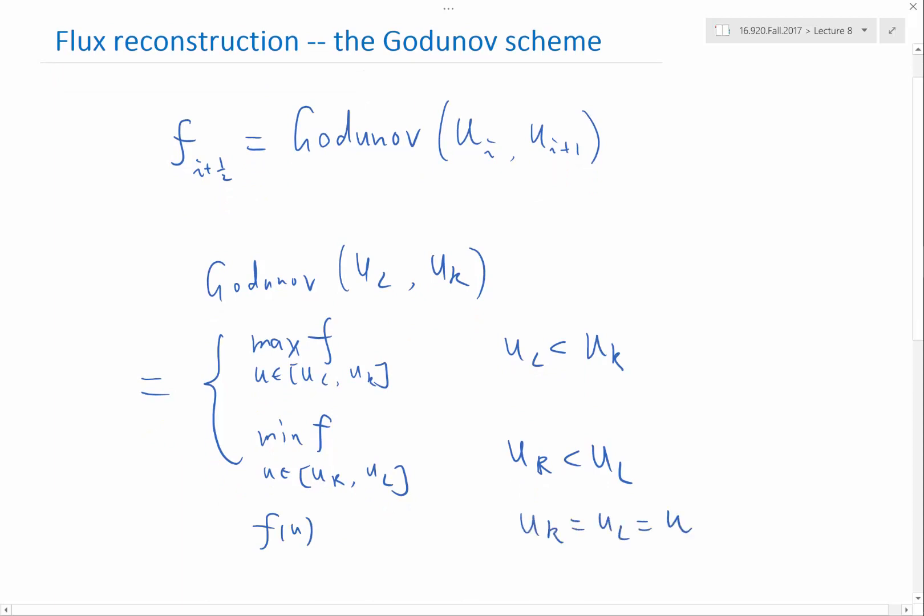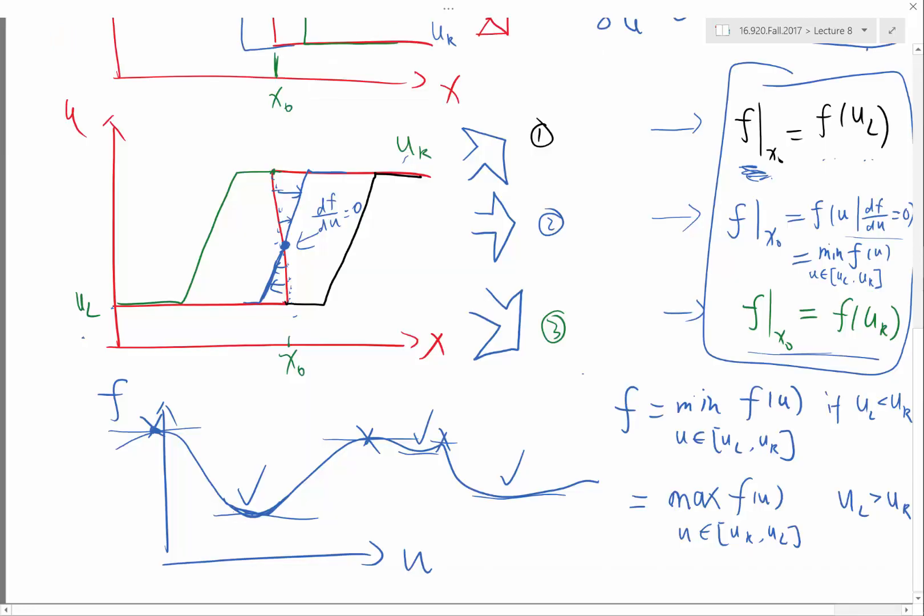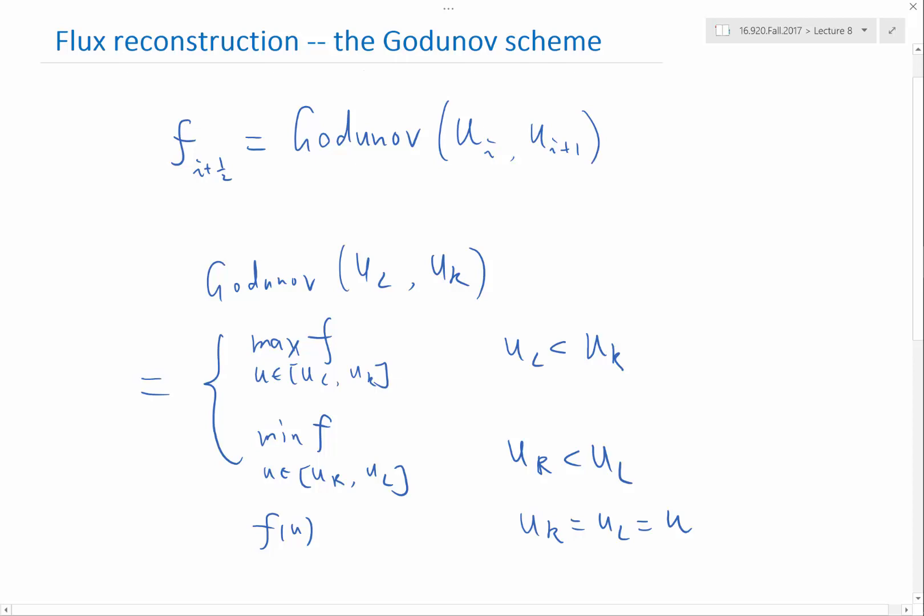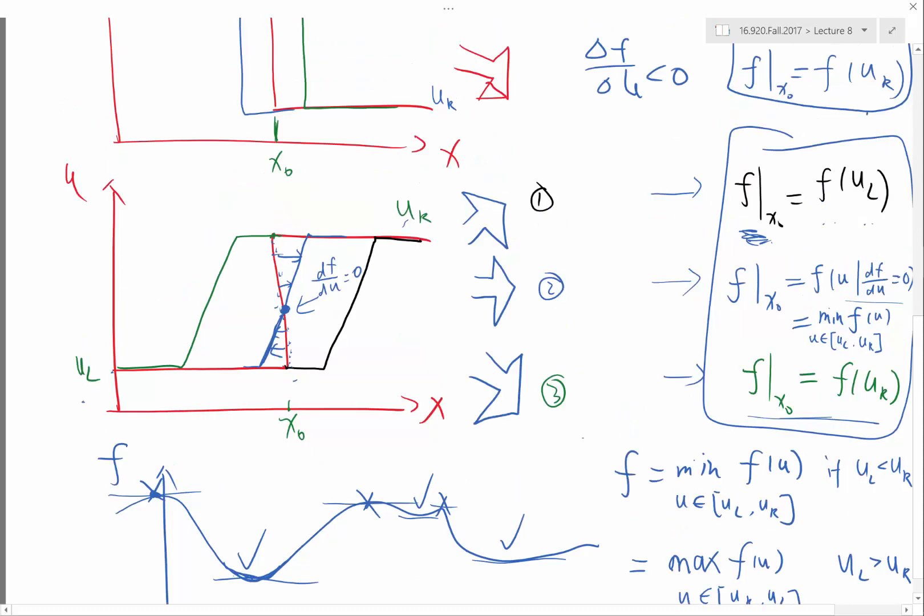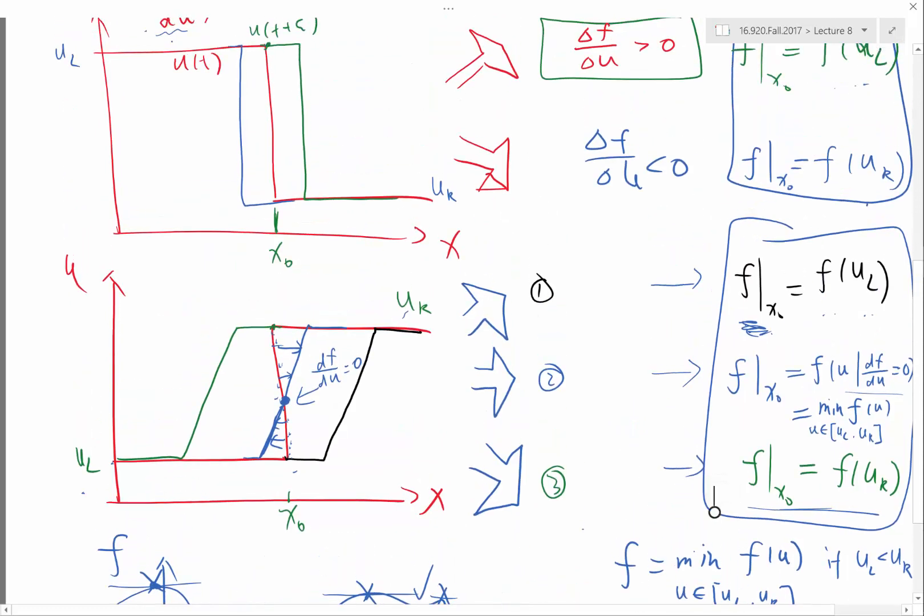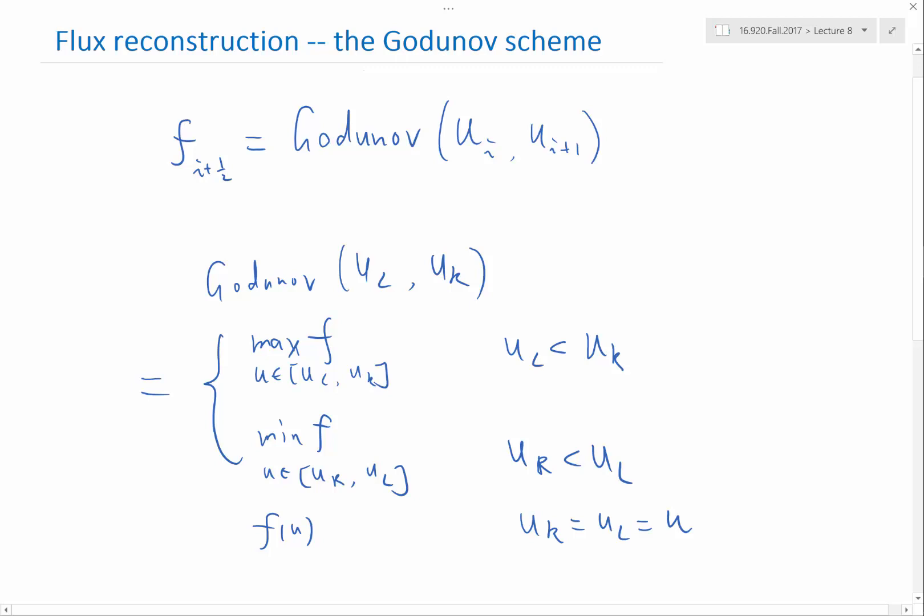Did I do it opposite? If uL is greater than uR, oh, max is greater, sorry. Minimum is the other way. Alright.